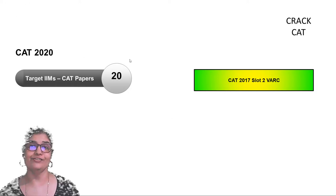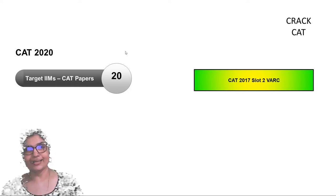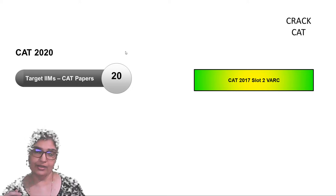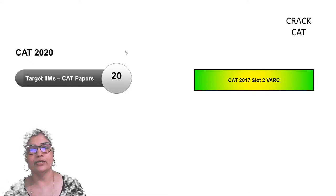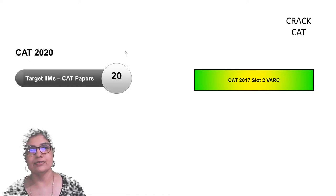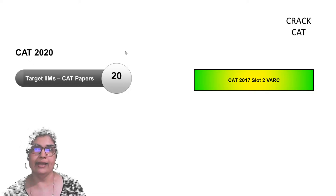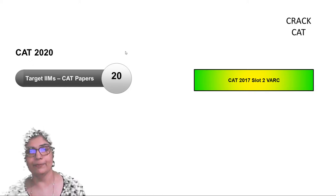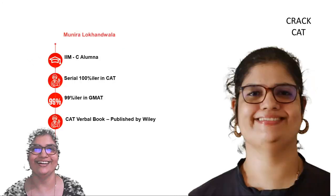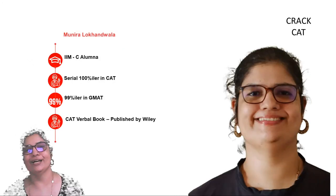We have done half of the CAT 2017 slot 2 verbal paper in the morning and now we are continuing with the second half. There are 34 questions, of which 18 are in reading comprehension. We covered the long passages in the morning, and right now we are going to cover the two short passages, the three summaries, four para jumbles, and three odd men out.